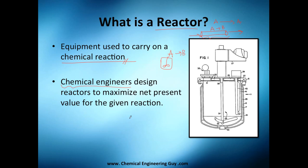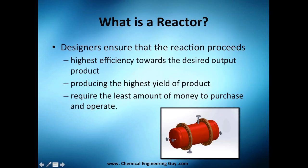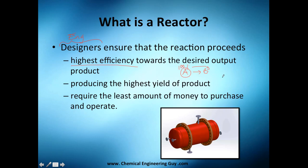Maximizing net present value means improving the reaction to get more profit. The designers ensure the highest efficiency possible towards the desired product — turning A into B. Sometimes you can't achieve full conversion, so you design the reactor or change temperature, pressure, and flows to improve the conversion rate.